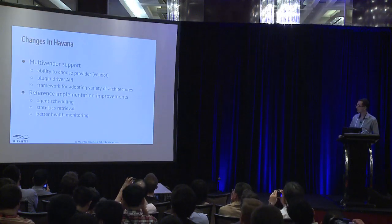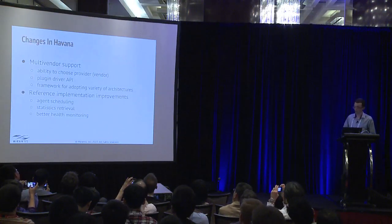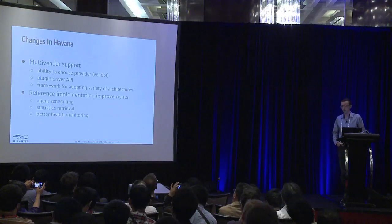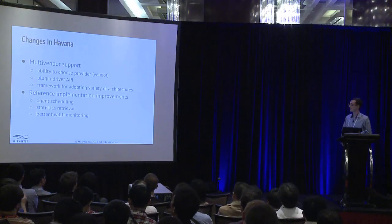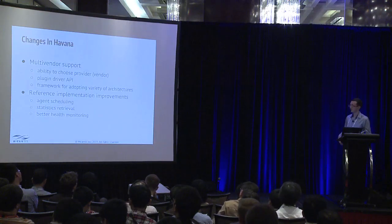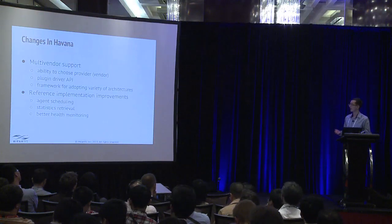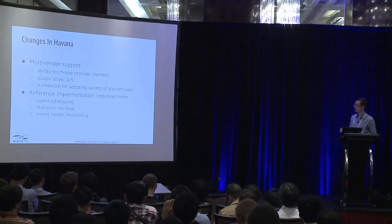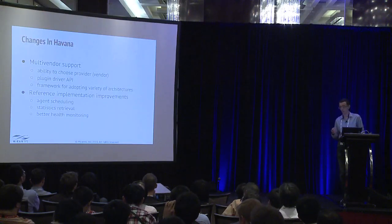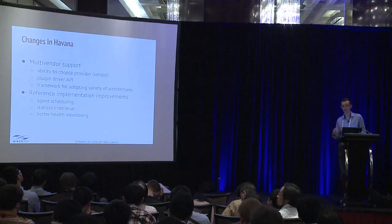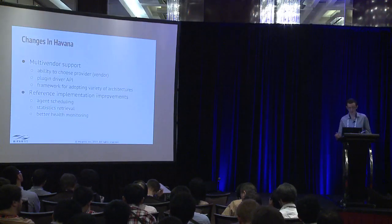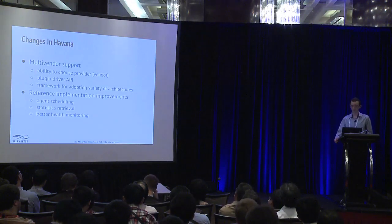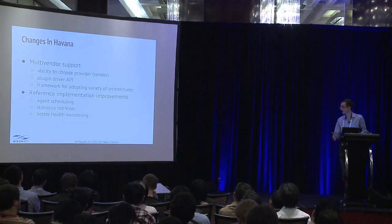I'd like to talk about the major changes we made in Havana. In the Grizzly release, the whole thing was somewhat experimental and hard-coded into the existing HAProxy implementation. The first thing we did was add multi-vendor support — the ability for the user to choose the actual implementation of the service they create. It's an additional extension that allows you to specify the provider at the point when you create a pool.